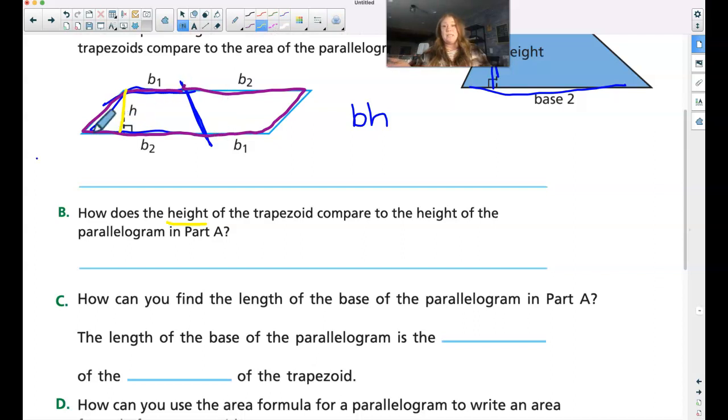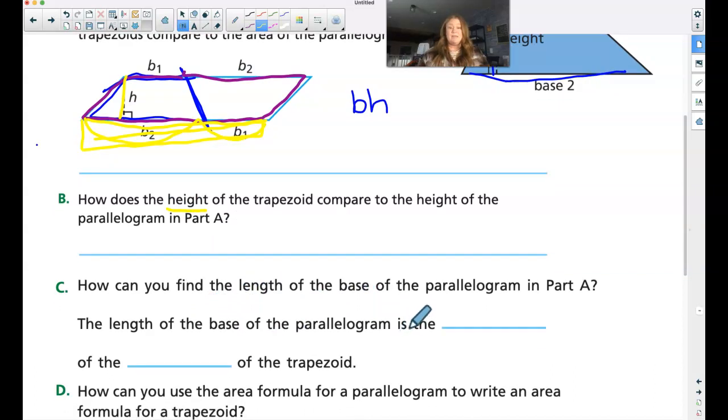Now this whole entire thing became the base. So I need to put base two and base one together to make this entire base. So the length of the base of the parallelogram is the, so when we add things together, that is called the answer to an addition problem, is the sum.